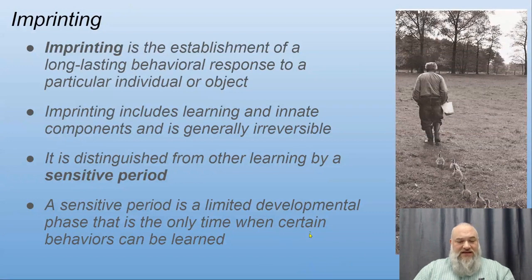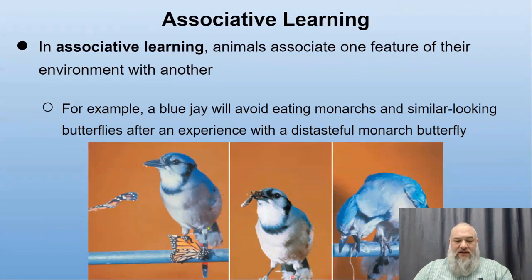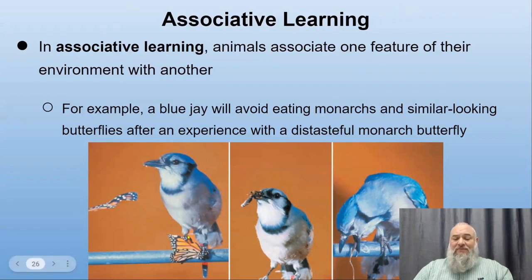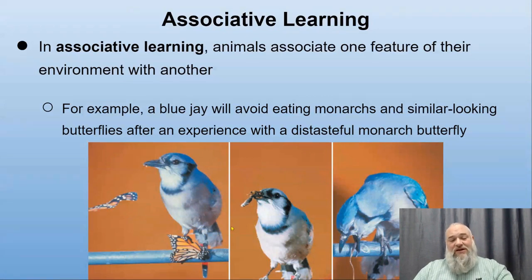Associative learning is when animals associate one feature of the environment with another. A blue jay that eats a monarch butterfly finds it bitter and slightly poisonous. It associates that color pattern with bad taste and won't eat one again. This is why so many butterflies have evolved to mimic monarchs even though they're not poisonous — birds can't tell the difference and avoid them.